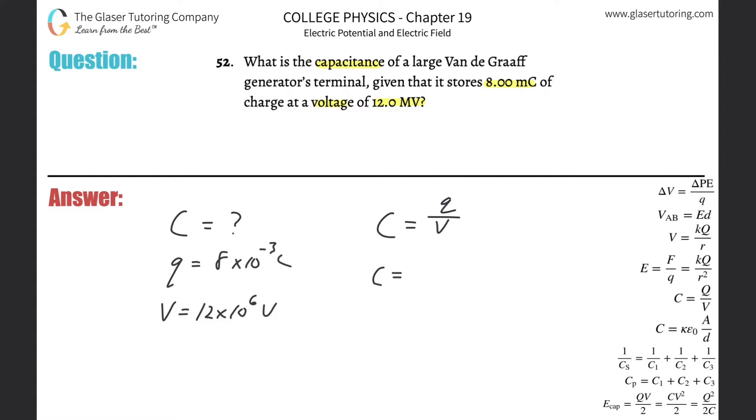So if I want to solve for C, I got to know the other two, which I do. So simply just plug it in: 8 times 10 to the minus 3 divided by 12 times 10 to the positive 6.